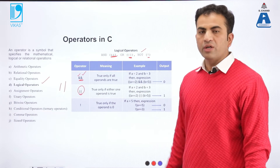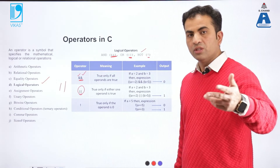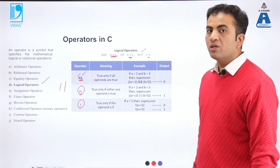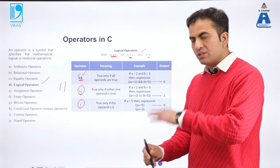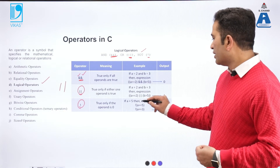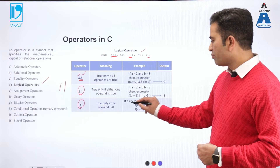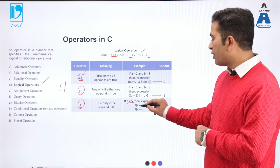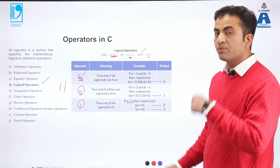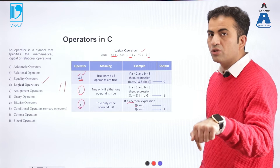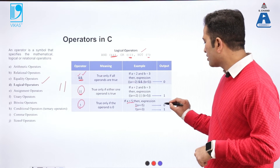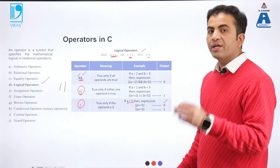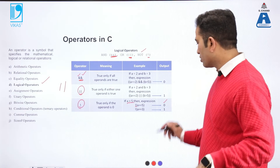NOT is true only if the operand is 0 — it is the opposite. For example, if A equals 5, the expression A equal to equal to 5 is true. But if we apply NOT, that means A is NOT equal to 5, which is absolutely false because the value of A is 5, so the output is 0. If we say NOT (5 equal to equal to 3), that means 5 is not equal to 3, the condition is true, so the output is 1.